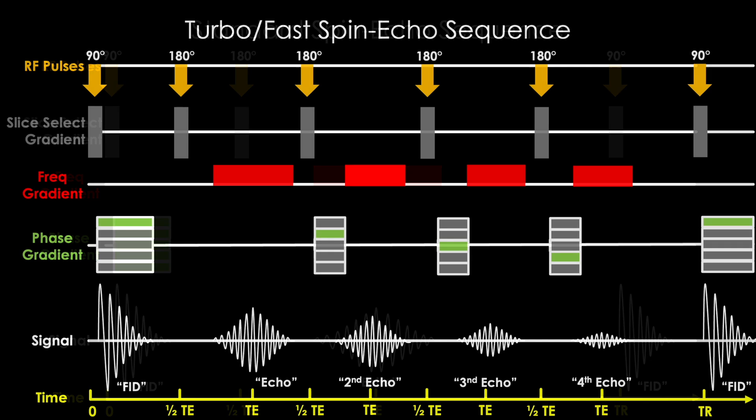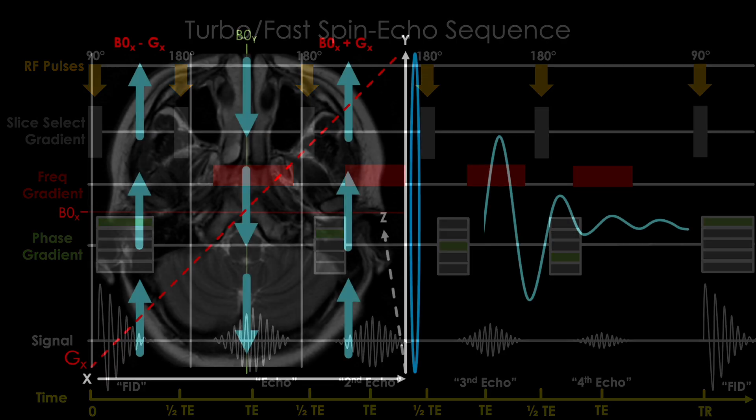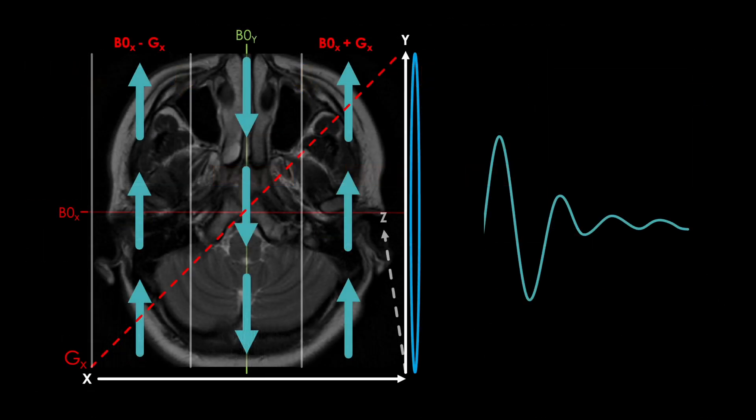What about the turbo slash fast spin echo sequence? All of these applied gradient fields decrease signal, decrease signal further, and more, and more, and more. So are we doomed? Forever saddled with this catch-22 of needing more gradients for better image quality, but each gradient in fact degrading our signal and picture?